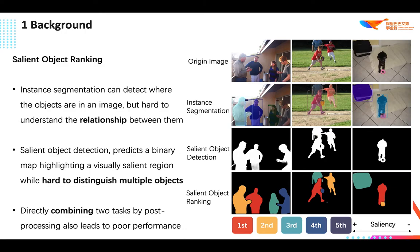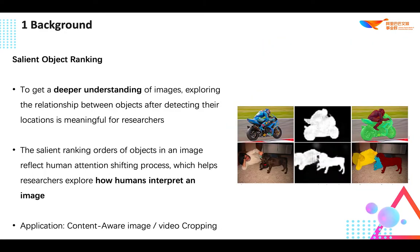In this paper, we study the salient object ranking, SOR, task, which manages to assign a ranking order to each detected object according to its visual saliency. Exploring the relationship between objects after detecting their locations is meaningful for researchers. A typical relationship is relative saliency, which compares which one is more attractive than another. Salient object ranking, SOR, is a recently proposed problem handling scenes of multiple objects, assigning a unique ranking order to every detected object according to its visual saliency.